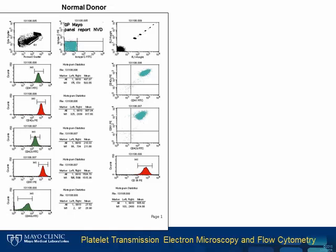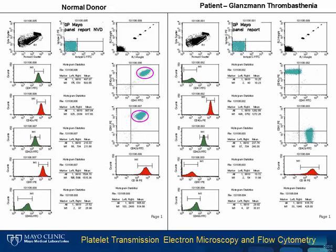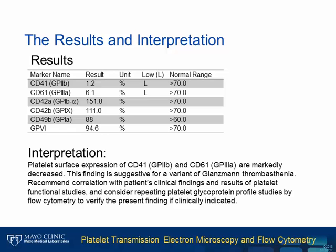Here is an example of a normal donor platelet flow cytometry histogram showing normal expression levels of glycoproteins. Here are histograms of a case of Glanzmann thrombasthenia — you may notice that the platelets have decreased CD41 and CD61 expression. The expression level of each glycoprotein is measured and converted to percentage of median normal expression. Expression of GP2B is at 1.2% and GP3A is at 6.1%, findings consistent with Glanzmann thrombasthenia.